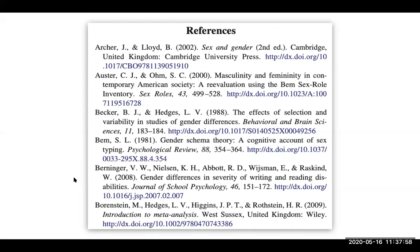Here's an example of the References section of a research paper written in APA style. It is made up of a number of references, such as one that starts with Archer, one that starts with Elster, another that starts with Becker, and so on. We are able to identify each reference by looking for a formatting pattern of the author's last name, an initial, year, title, and then other information ranging from names of journals, page ranges, and URLs.